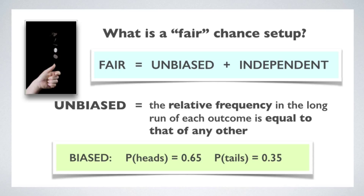Here's a way of capturing the notion of a biased chance setup. We can talk about a coin being biased in favor of heads. Maybe because of the way the coin was made, the probability of the coin landing heads is 65% instead of 50%, and correspondingly, the probability of landing tails is 35% instead of 50%. An unbiased coin has a probability distribution where half the time it lands heads on average, and half the time it lands tails.